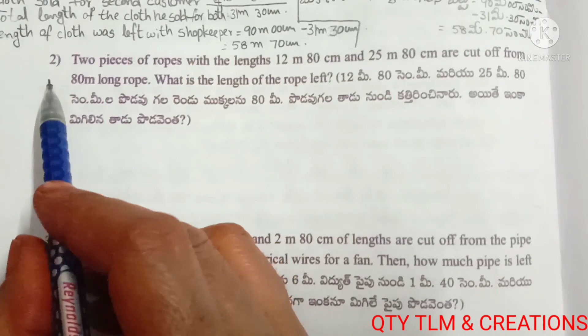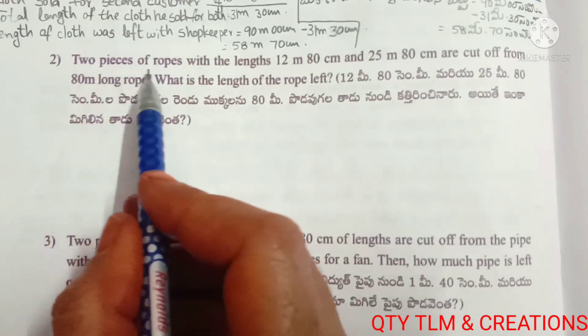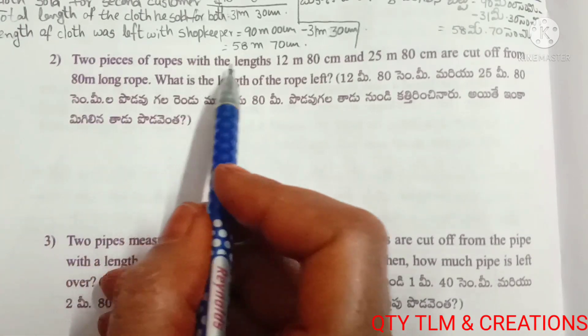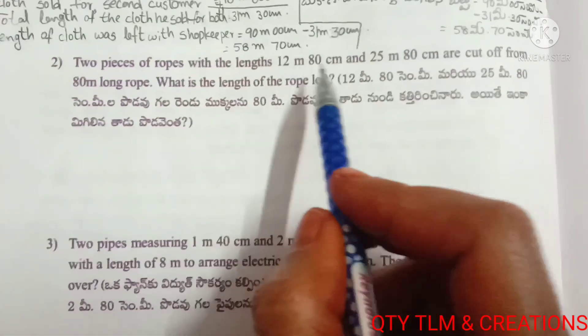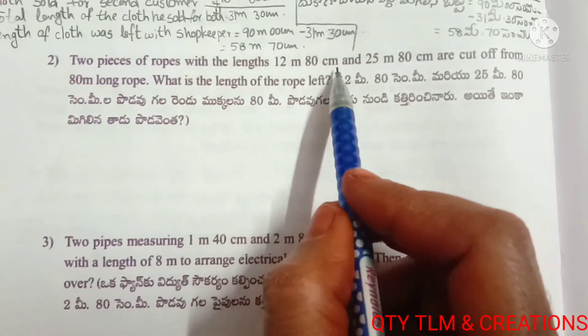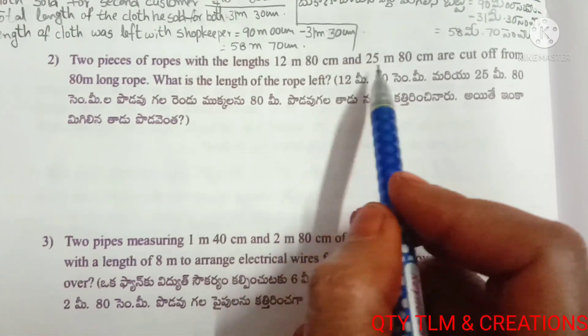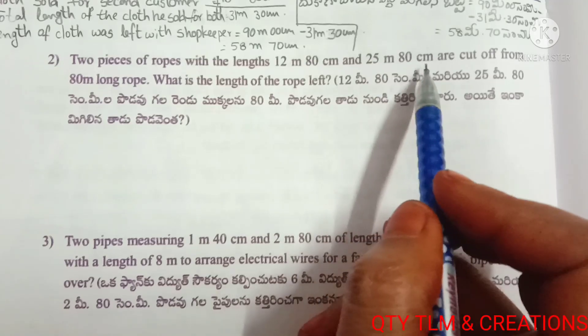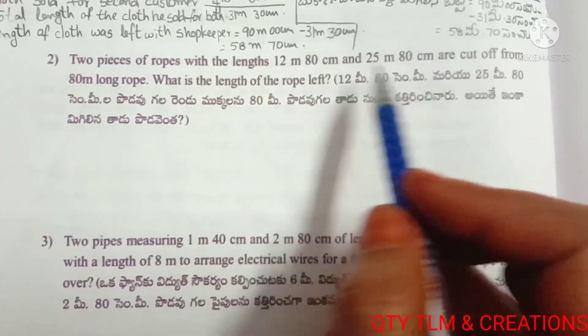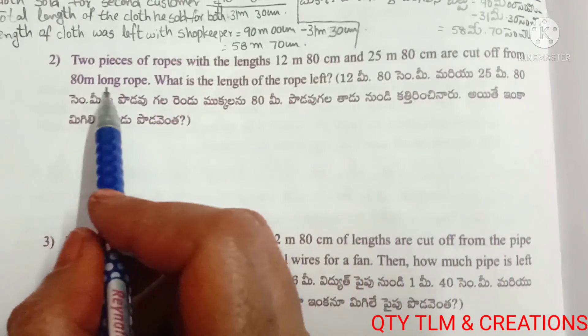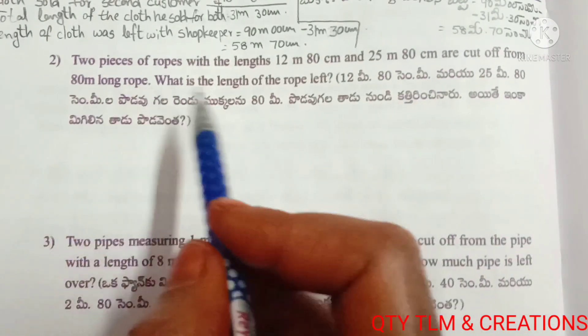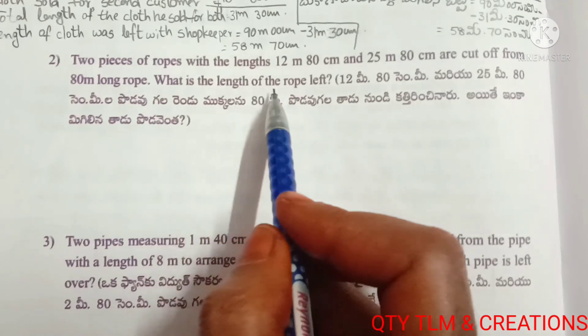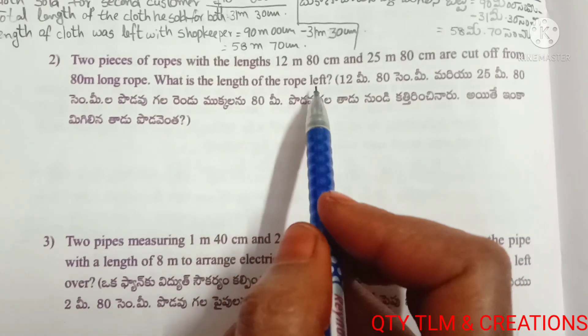Next question: Two pieces of rope with lengths 12 meters 80 centimeters and 25 meters 80 centimeters are cut off from an 80-meter long rope. What is the length of rope left?